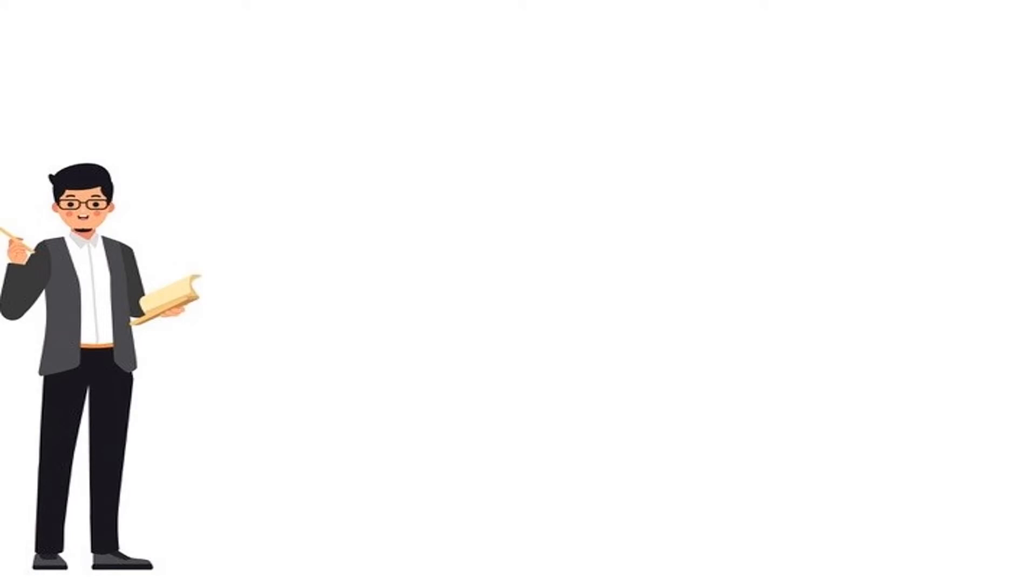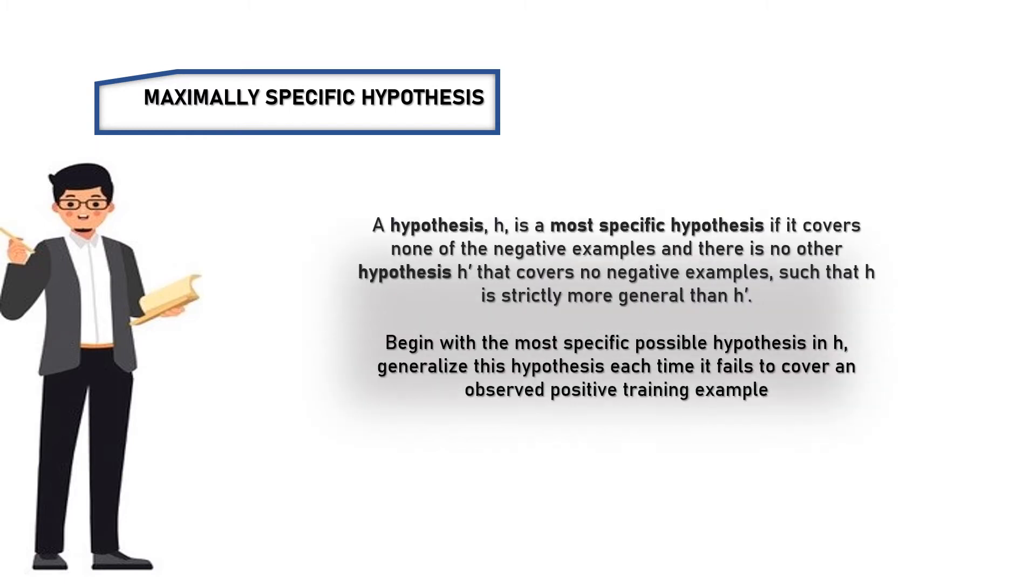Next coming to another topic of finding a maximally specific hypothesis. A hypothesis H is a most specific hypothesis if it covers none of the negative examples and there is no other hypothesis H naught that covers no negative examples, such that H is strictly more general than H naught. Begin with the most specific possible hypothesis in H. Generalize this hypothesis each time it fails to cover an observed positive training example.